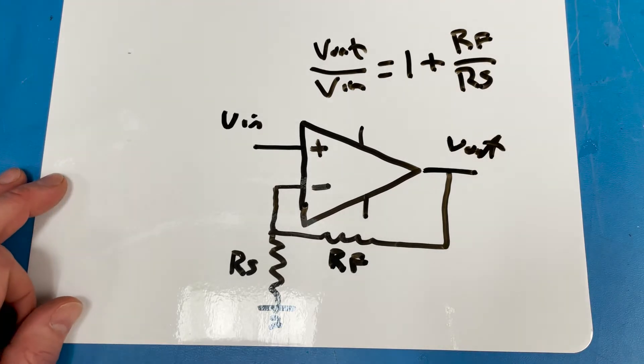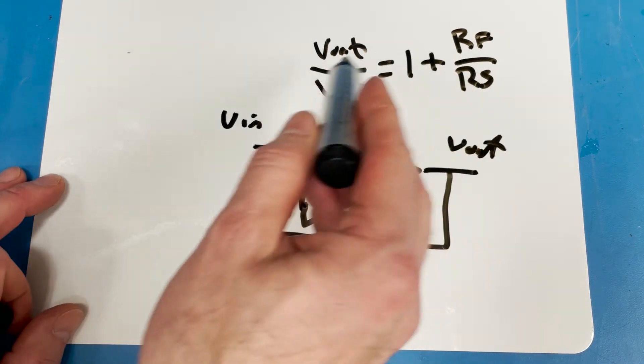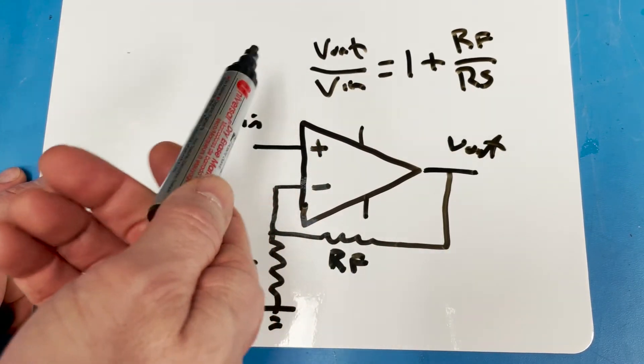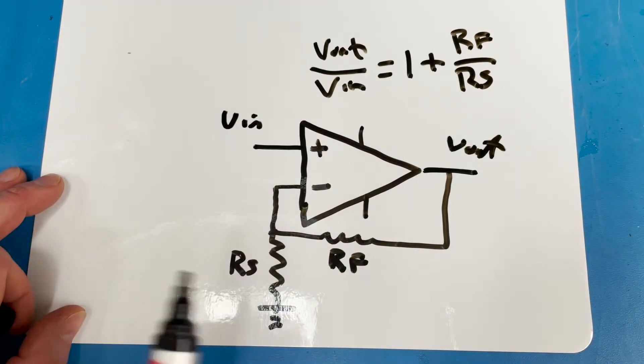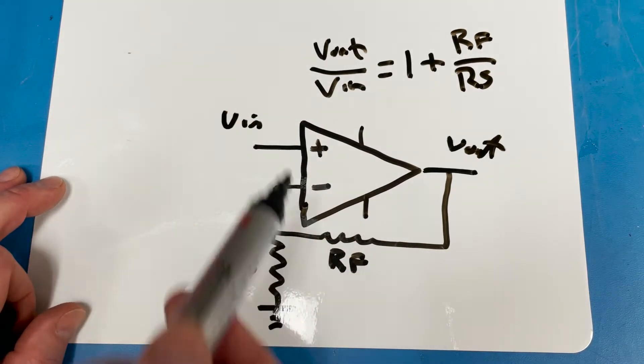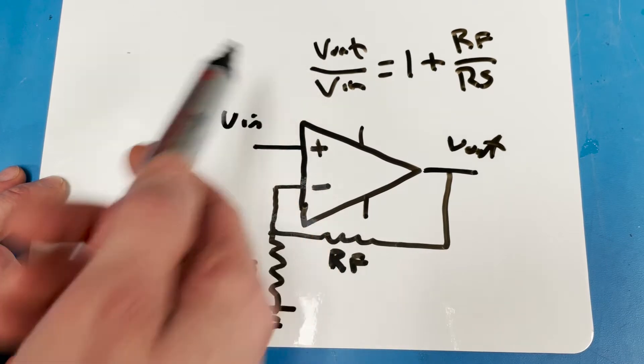So that's the equation right there, and we can use that to, if we have a gain that we know, say if we wanted to hit a gain of 10, we could choose appropriate resistors to do that. Or if we had a circuit that was built, we could use the equation forward in order to figure out what the gain was.